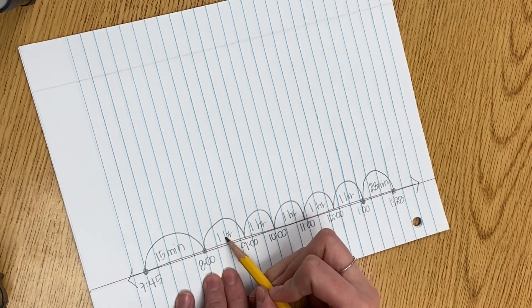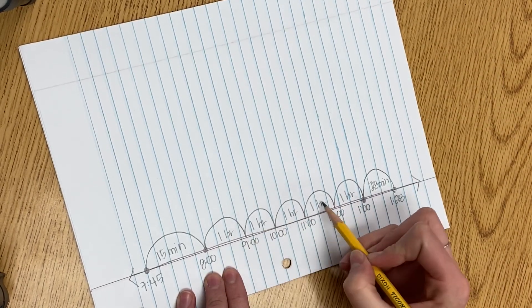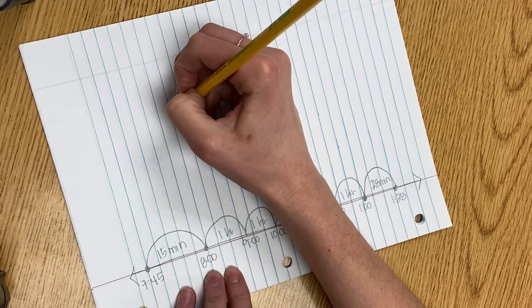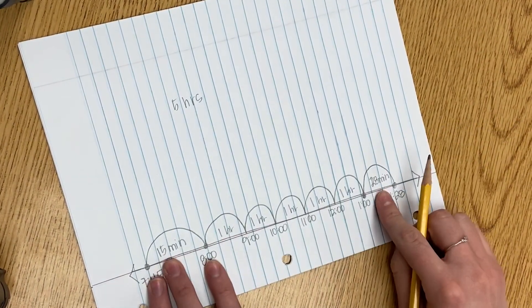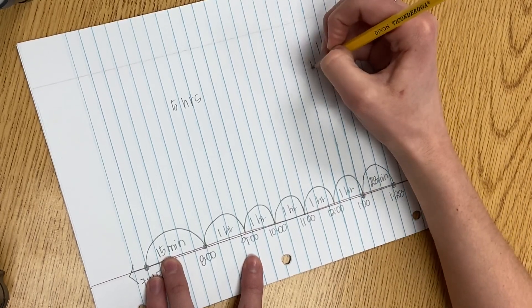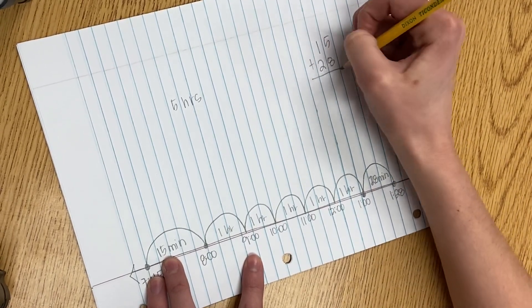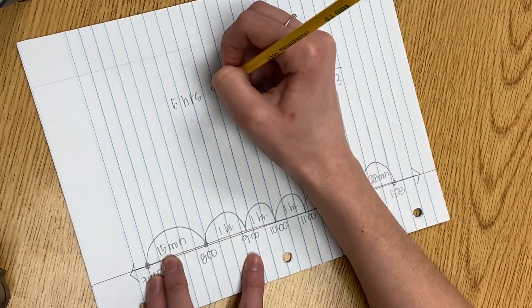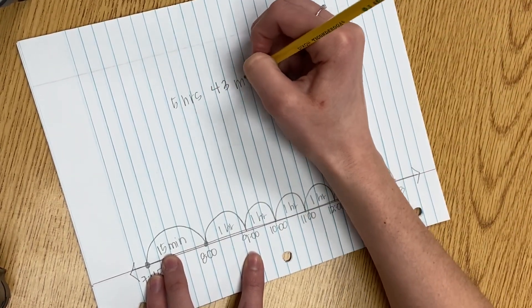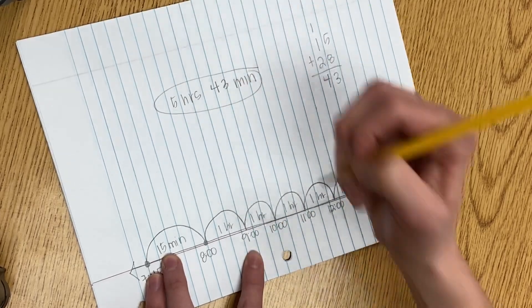So if I count my hours, I have 1, 2, 3, 4, 5 hours. And I'm going to add 15 minutes plus 28 minutes. 15 plus 28 gives me 43. So Christy was at school for 5 hours and 43 minutes.